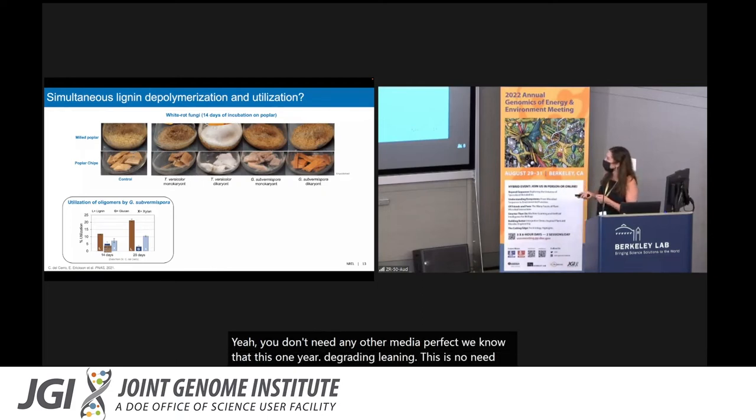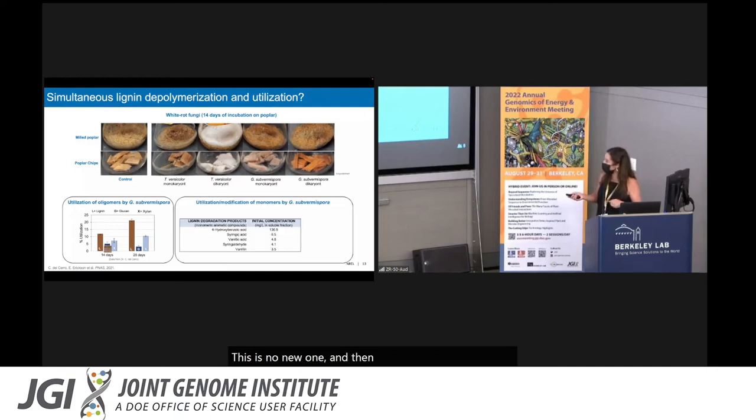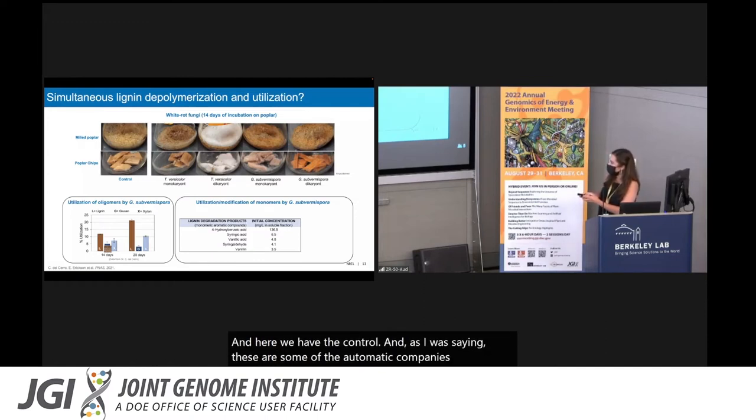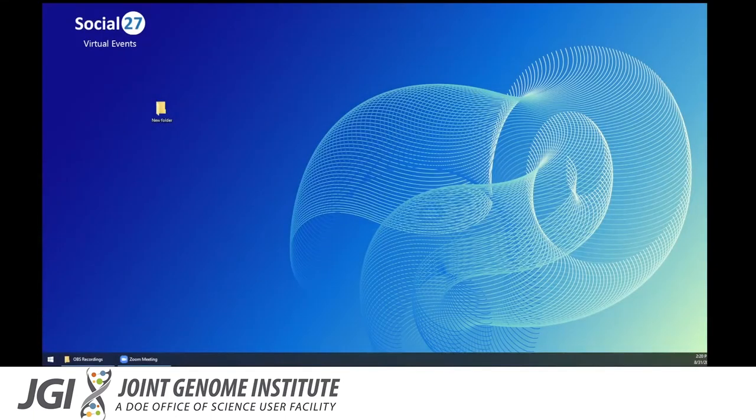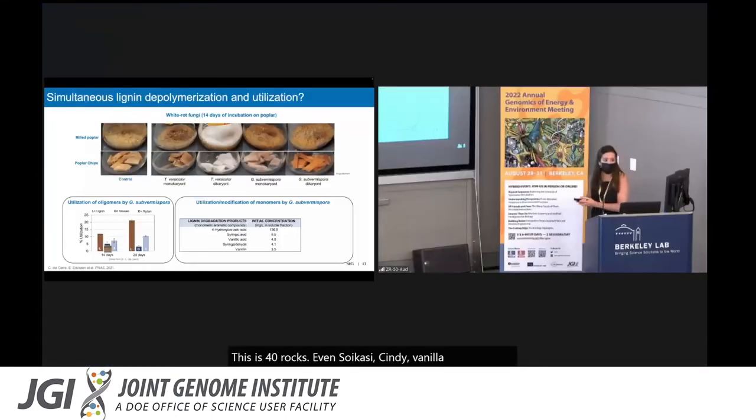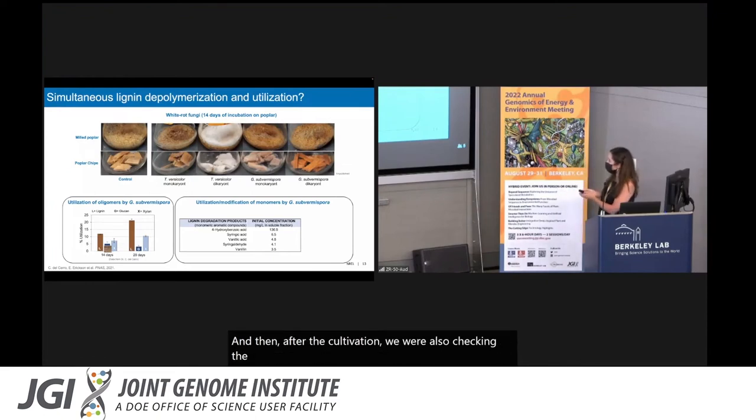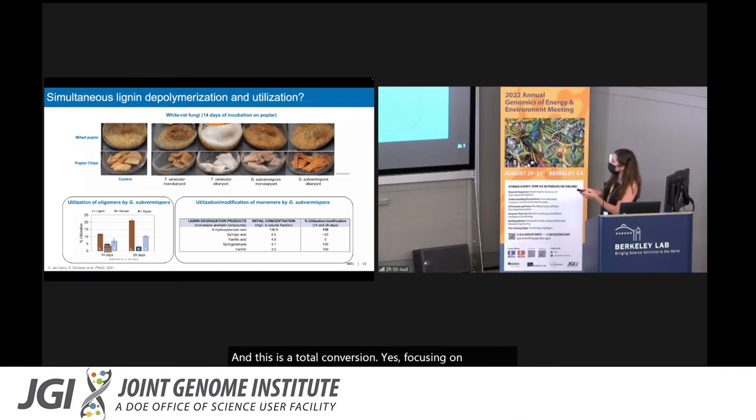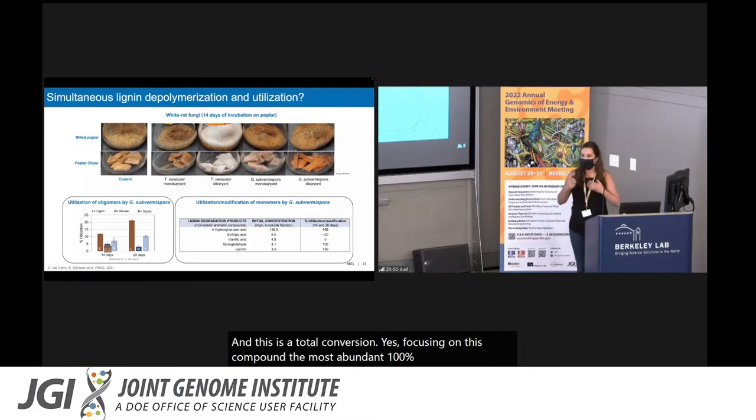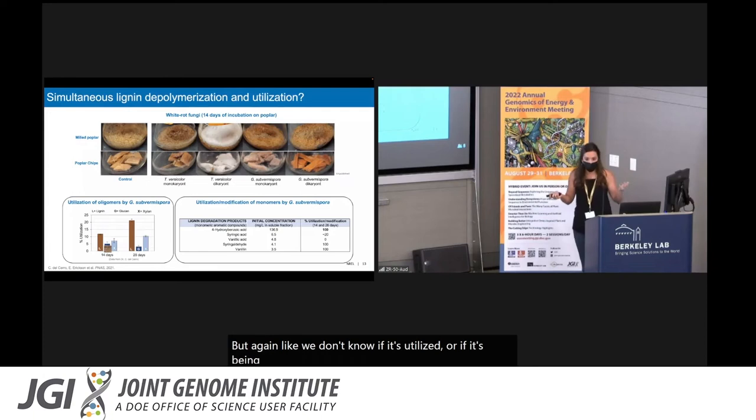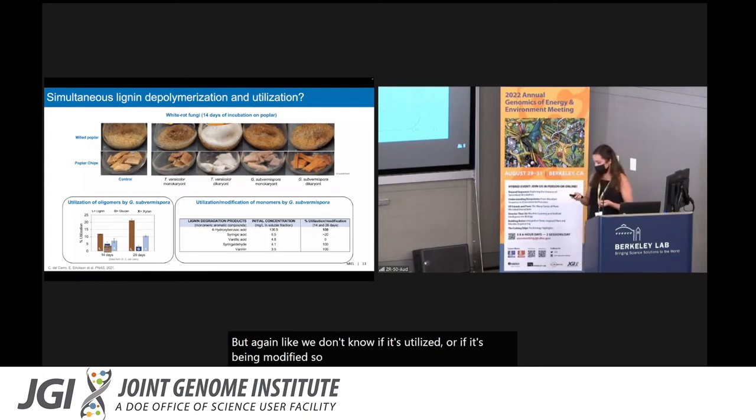But then we decided to track soluble aromatic compounds in the cultivation. Here we have the control. As I was saying, these are some of the aromatic compounds we find in poplar. This is 4-hydroxybenzoic acid, syringic, vanillic. Then after the cultivation, we were also checking the concentration of those aromatic compounds. This is the total conversion. Focusing on this compound, the most abundant, 100% had been utilized. But again, we don't know if it's utilized or if it's being modified. This is not conclusive. Let's try to utilize a different approach.